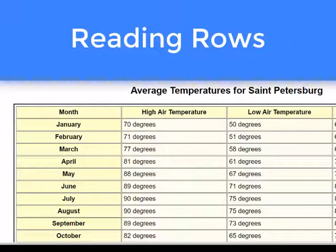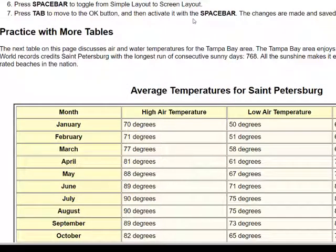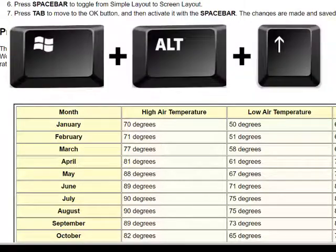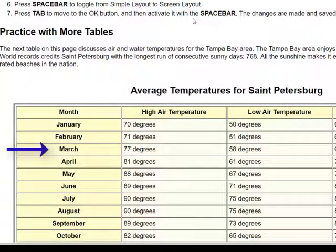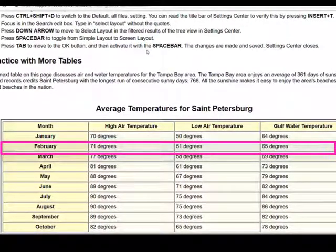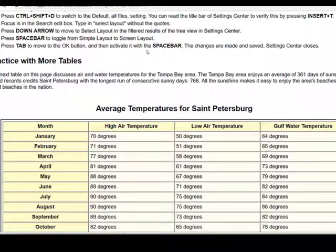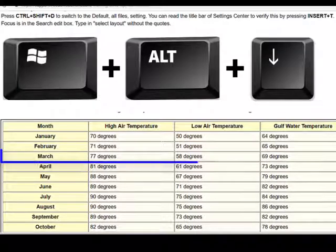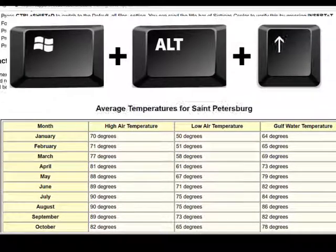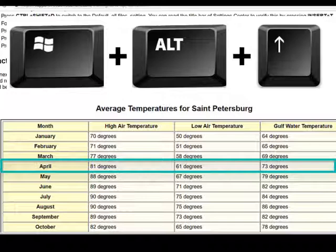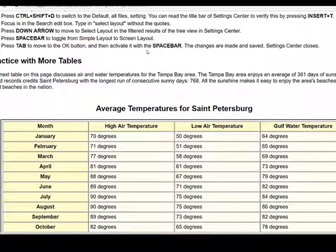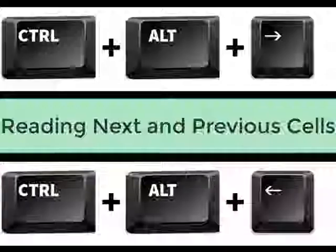To read down through the rows, instead of pressing left and right arrow, press up and down arrow with Windows+ALT. From the April column, pressing Windows+ALT+up arrow goes back to March: 77 degrees, 58 degrees, 69 degrees. Pressing it again gives February: 71 degrees, 51 degrees, 65 degrees. To reverse course, press Windows+ALT+down arrow: March 77 degrees, 58 degrees; April 81 degrees, 61 degrees, 73 degrees. That is how you navigate through a table.